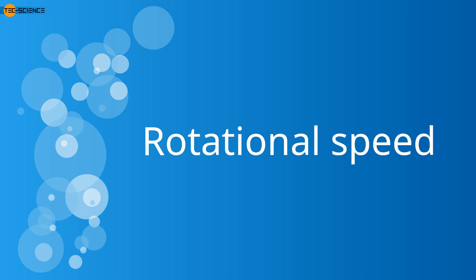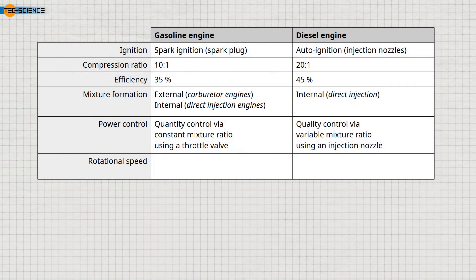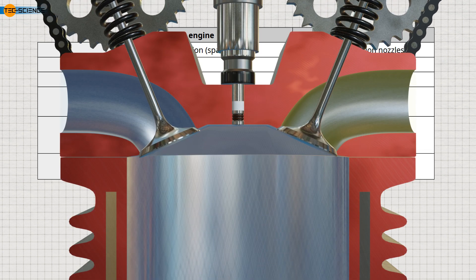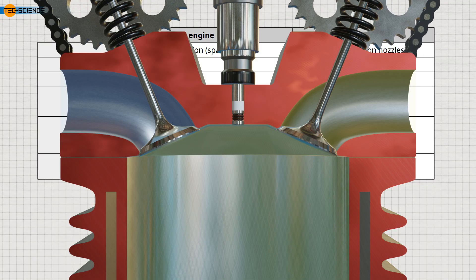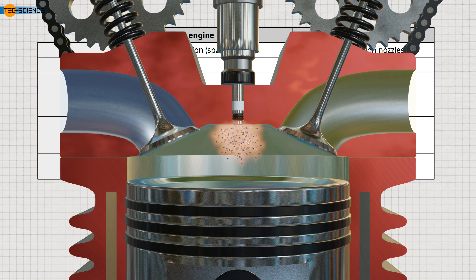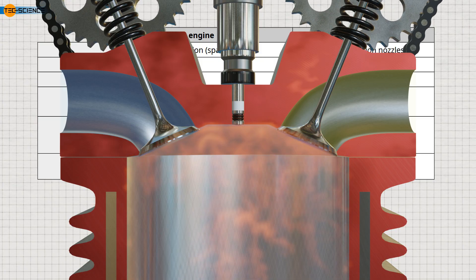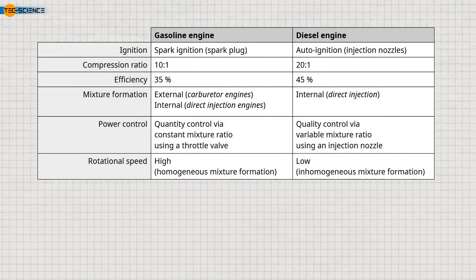There are also differences in the engine speeds that can be achieved between gasoline and diesel engines. Diesel engines typically cannot reach the high speeds that gasoline engines can. The lower speeds are due to the compression-ignition principle. Because diesel fuel is injected just before reaching auto-ignition temperature, it must mix homogeneously with the air in a short time before ignition. At high speeds, there isn't enough time for proper mixing, resulting in suboptimal combustion. Therefore, diesel engines cannot operate effectively at very high speeds.